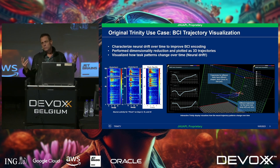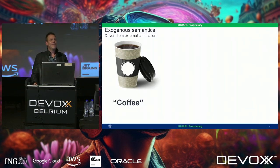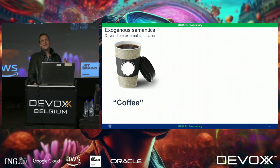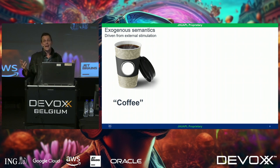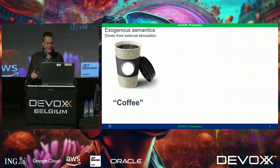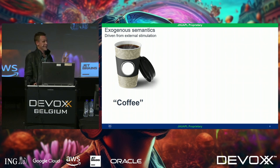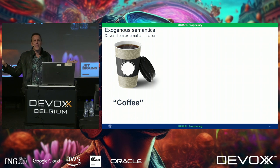But then the money ran out — no more BCI. The AI guys were like, 'Oh, we could use this for AI.' And they have lots of money because everybody's using AI and nobody knows what the hell's going on. So we made the pivot.